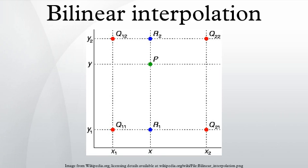We first do linear interpolation in the x-direction. This yields where we proceed by interpolating in the y-direction. This gives us the desired estimate of f(x, y). Note that we will arrive at the same result if the interpolation is done first along the y-direction and then along the x-direction.